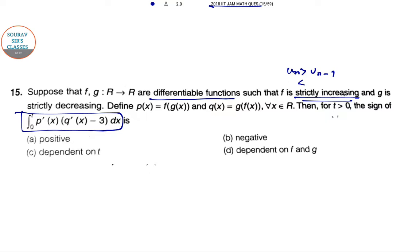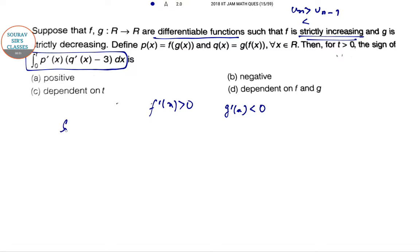Since f is an increasing function, we can see that f'(x) > 0. And g is a strictly decreasing function, so obviously the first order derivative will be negative. Since p(x) = f(g(x)), p'(x) by the chain rule is f'(g(x)) · g'(x). This is positive times negative, so ultimately this sign is negative. So p'(x) < 0.